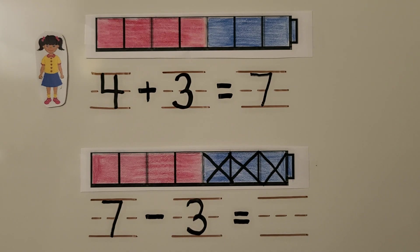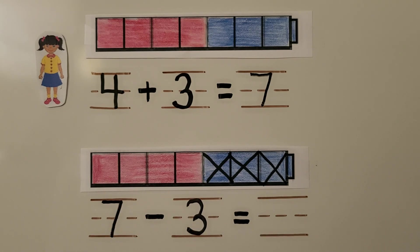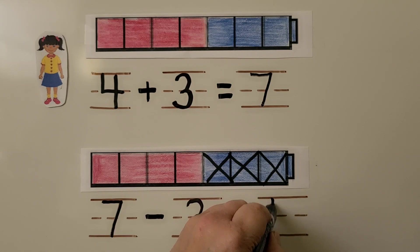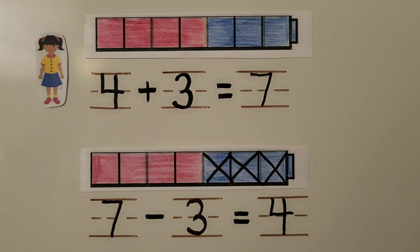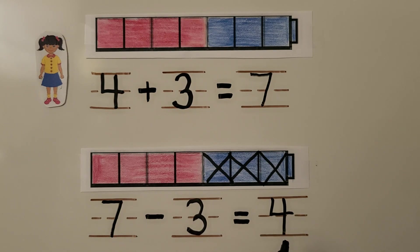And we can count how many are left: one, two, three, four. She has four cubes now. She gave the three to her sister. We write a subtraction sentence with a minus and an is-equal-to symbol. Seven minus three is equal to four. We can cross out the three blue cubes and count what's left to find what seven minus three is equal to.